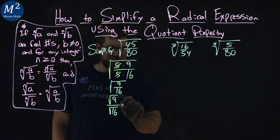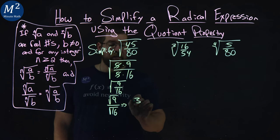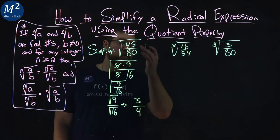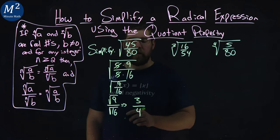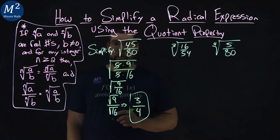Well, square root of 9 comes out to be 3 and square root of 16 comes out to be 4. And so when it's all said and done, the square root of 45 over 80 is 3/4.